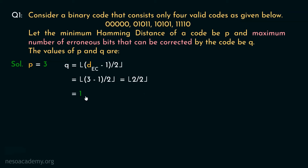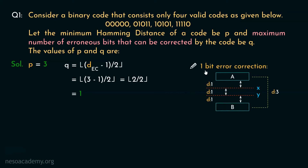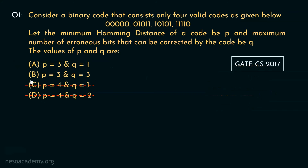This is also correct, because when we studied 1-bit error correction, we observed that the distance between two valid patterns should be at least 3. If the distance is 3, at max we can correct 1-bit errors. Coming to the options, option B has Q equal to 3, so it is also incorrect. This gives us option A as the only correct answer, where the value of P is 3 and the value of Q is 1. So this is how these questions can be solved.